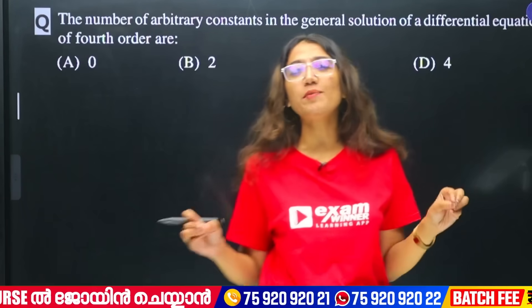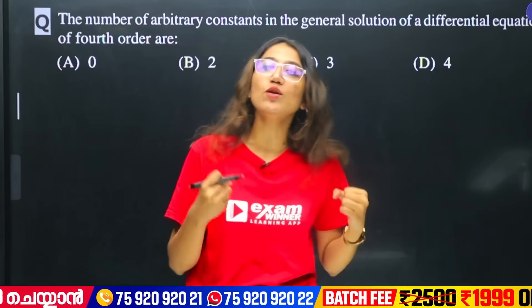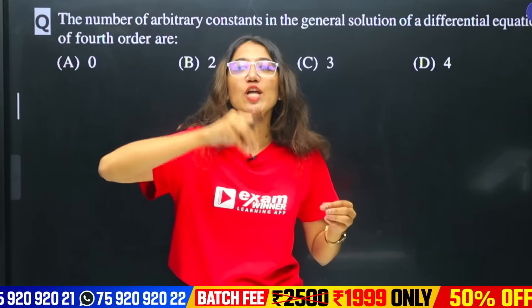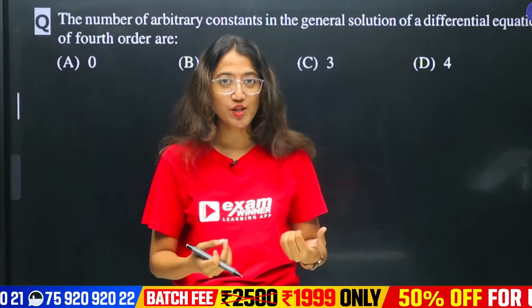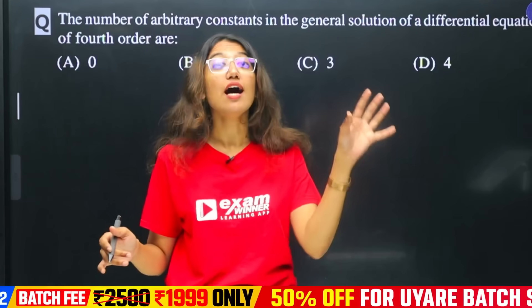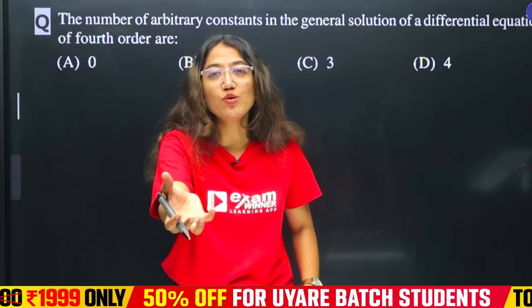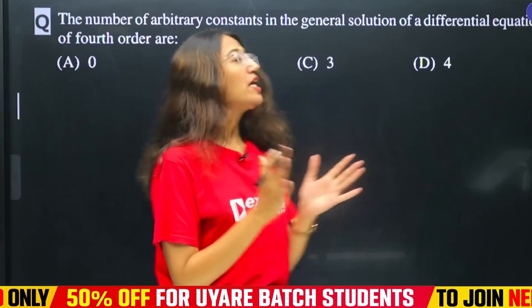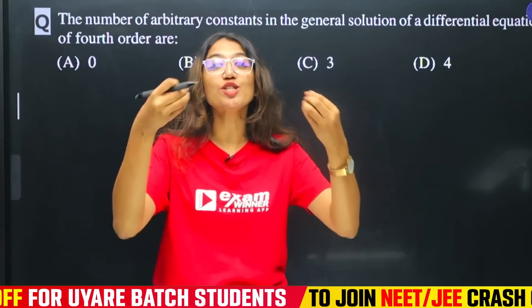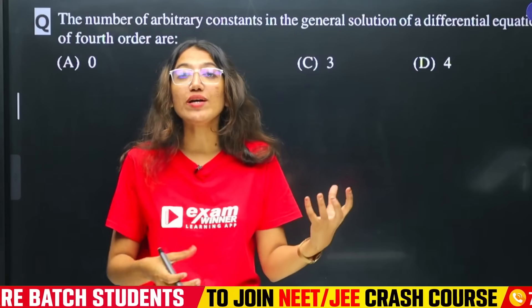If you have a general solution, you will have arbitrary constants — A, B, or C. If you substitute values to give specific values to those constants, you will get a particular solution. If you have an order, the general solution contains arbitrary constants, and the number of arbitrary constants equals the order of the differential equation.